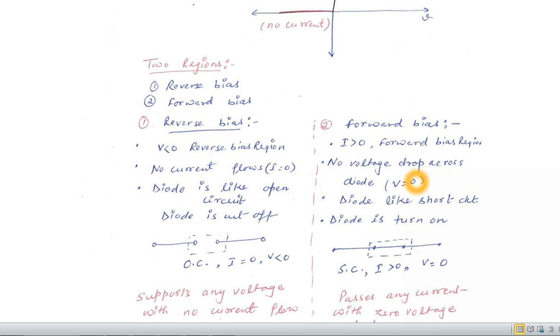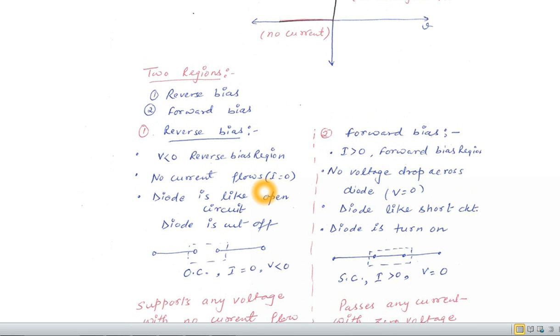In reverse bias, diode behaves like an open circuit but in the forward bias, diode behaves like a short circuit.